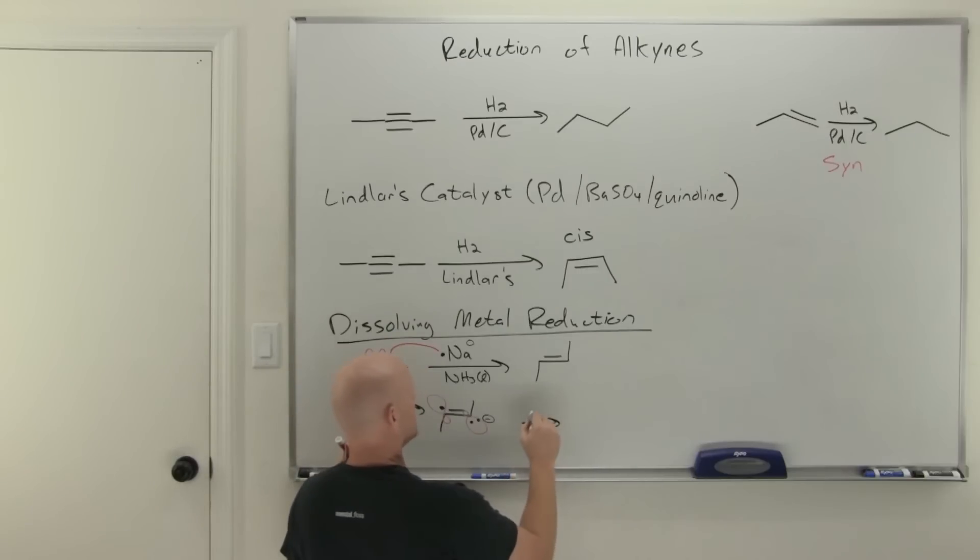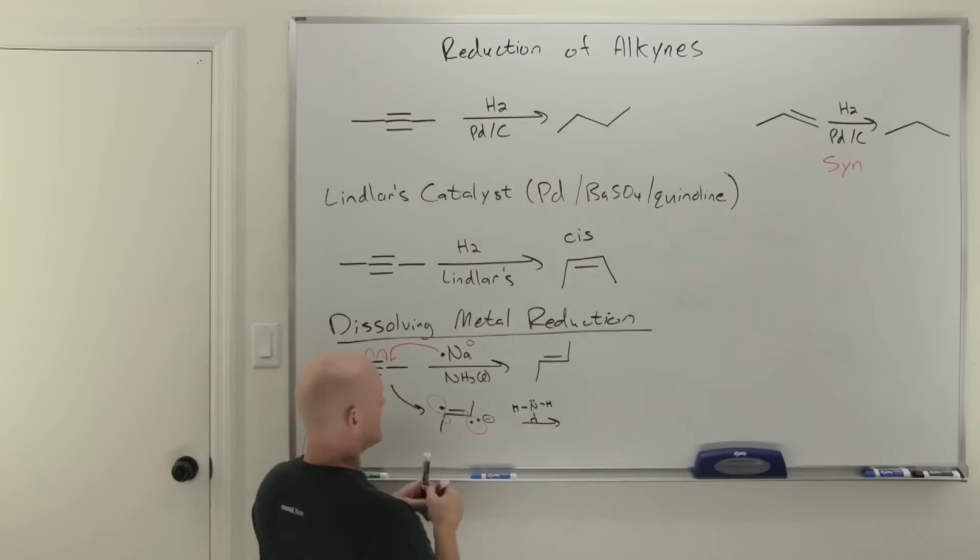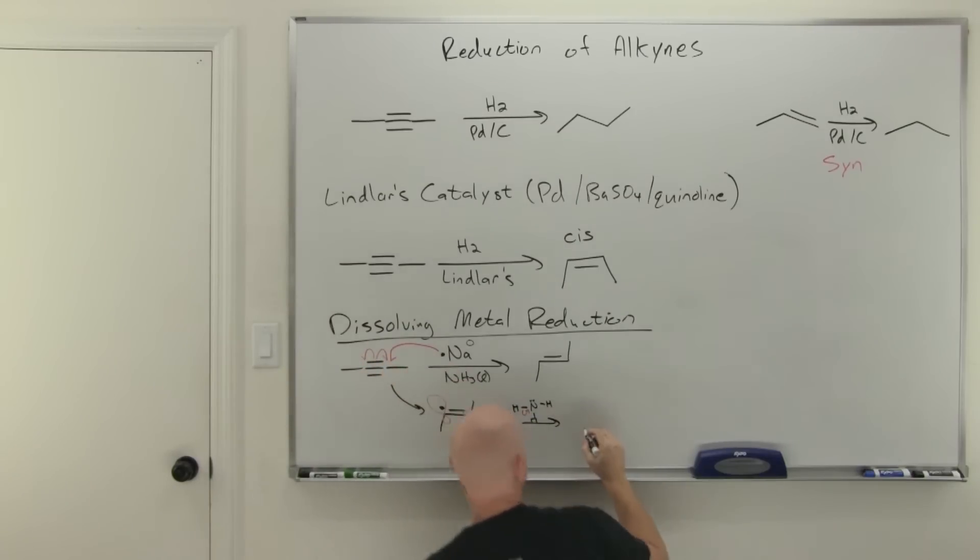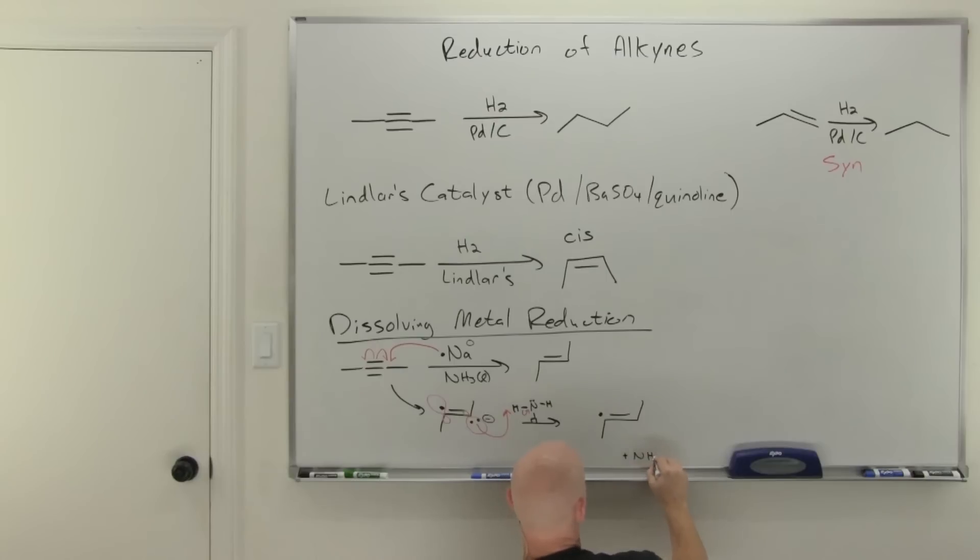We're not quite done with this reaction here. Here's where ammonia is going to get involved in the process. We'll draw in a molecule of ammonia and we're going to use this lone pair to deprotonate ammonia. There's still a radical there, but at this carbon we just picked up a hydrogen so it's no longer an anion. We also just formed a molecule of NH2 minus here.